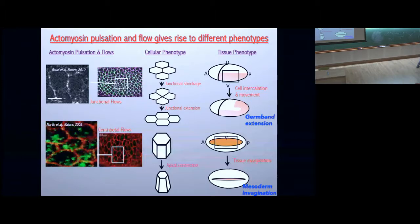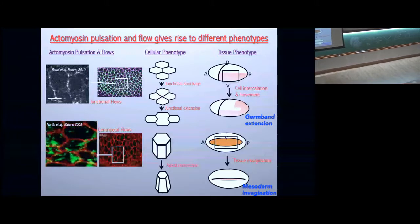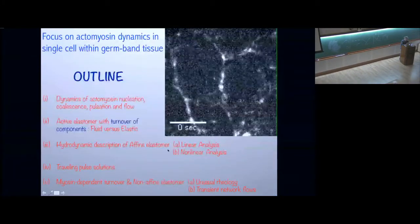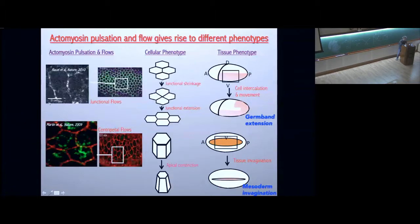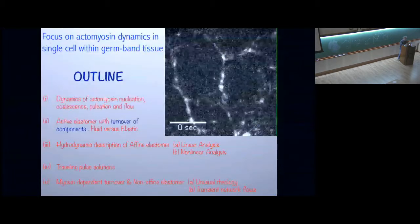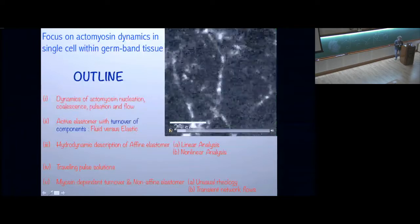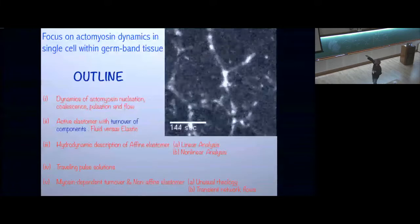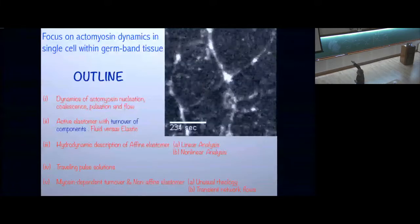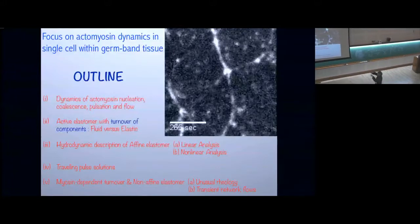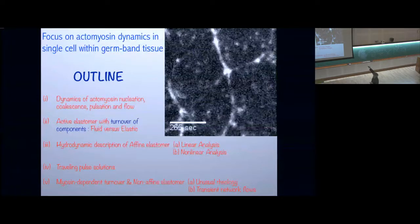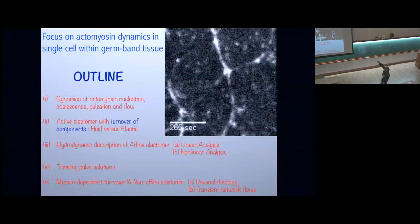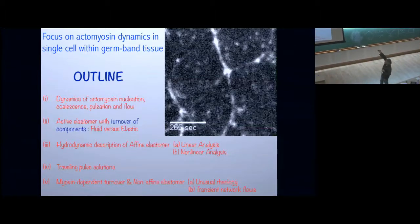This is a big puzzle and challenge for biologists to understand. We'll focus on germ band extension. What you're seeing is actin in individual cells — they form clusters, coalesce, and move, generating changes in cell shape. What we'll be talking about is the dynamics of actin and myosin: its nucleation, coalescence, pulsation, and flow in each cell.